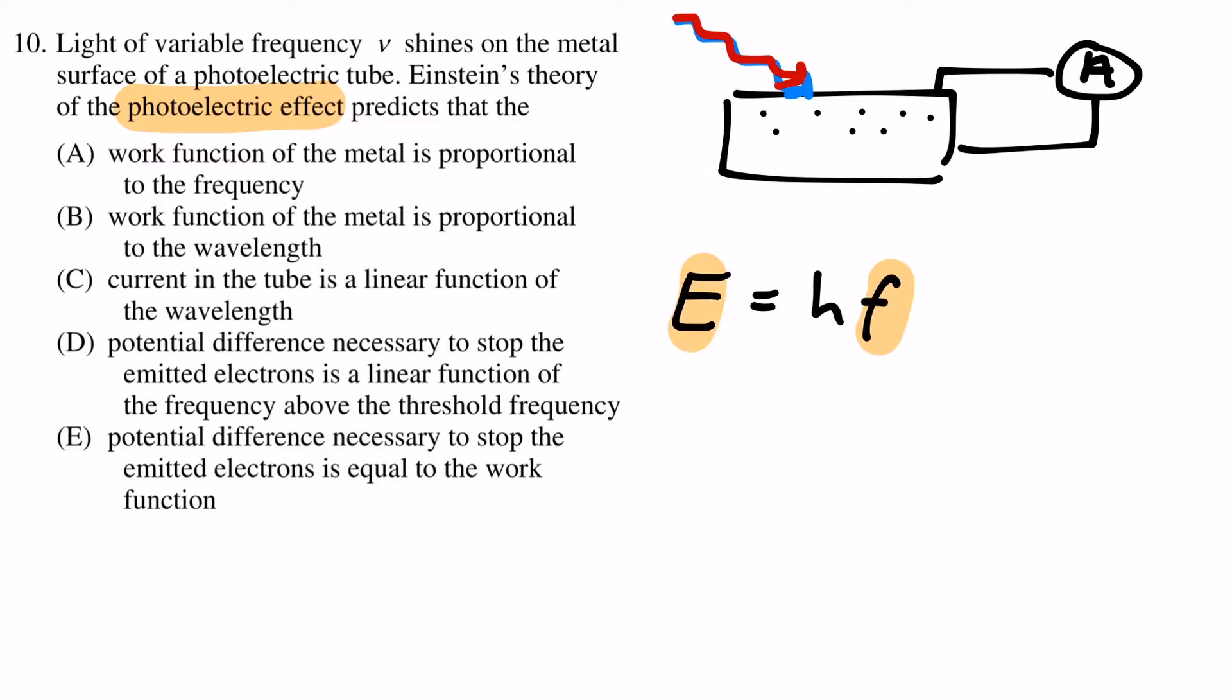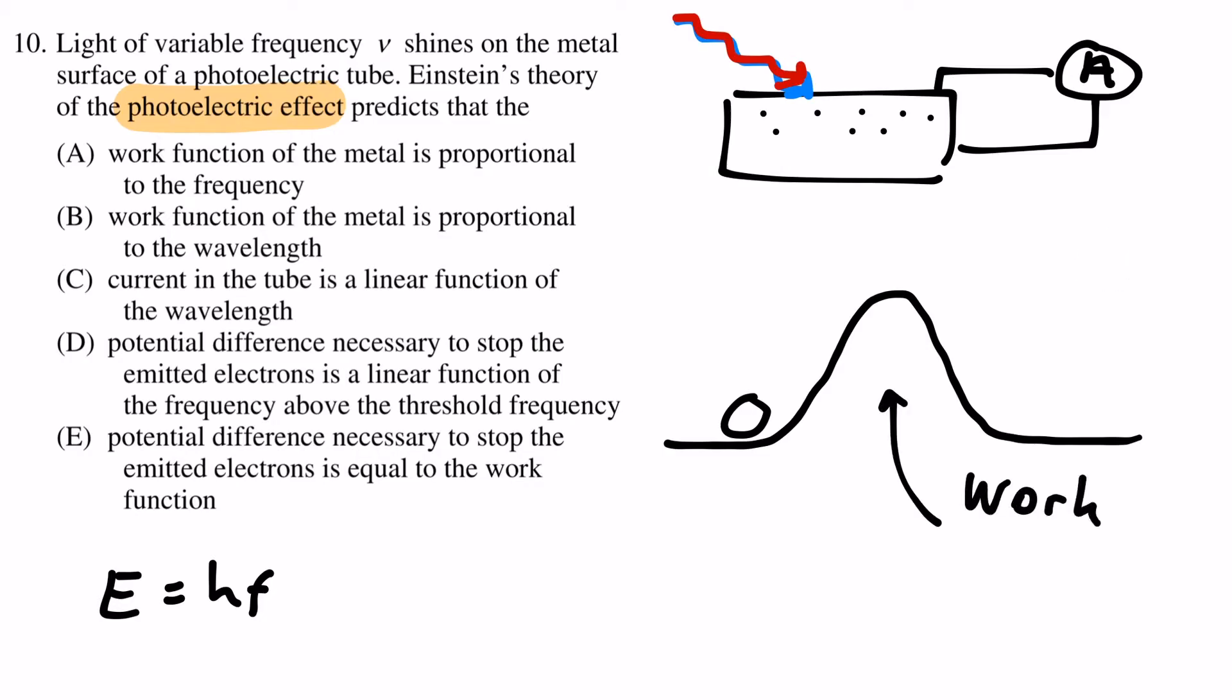So the higher the frequency, the higher the energy. Einstein assumed that there is some kind of barrier that prevents the electrons to become free particles on their own. We now call this a work function.